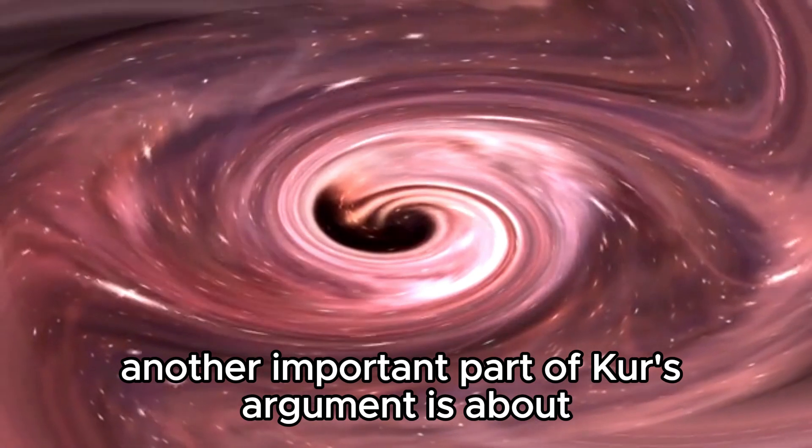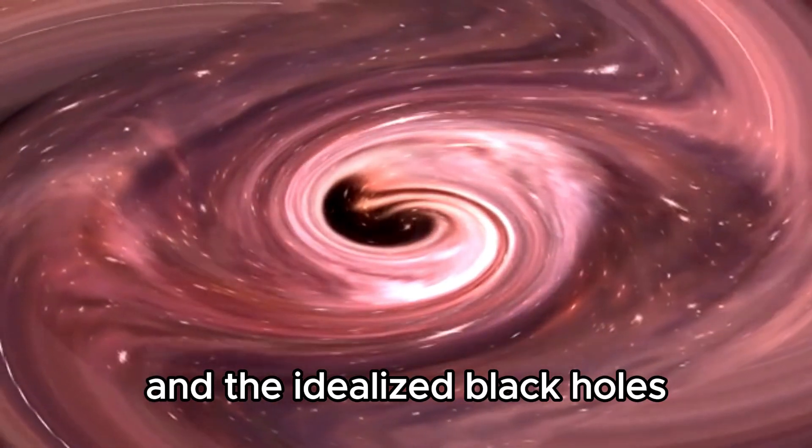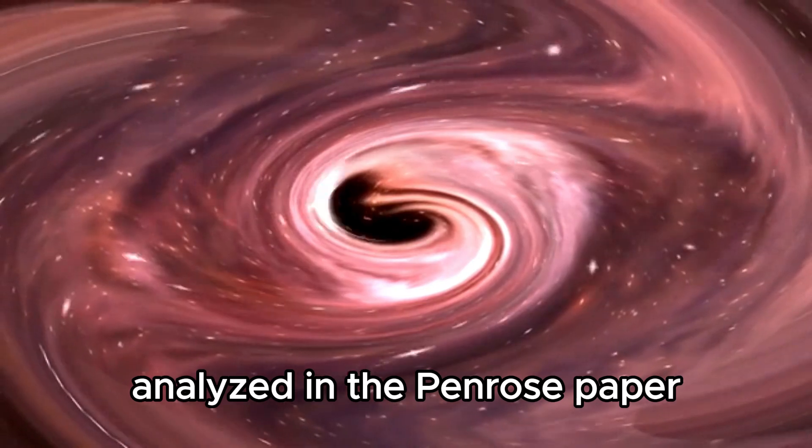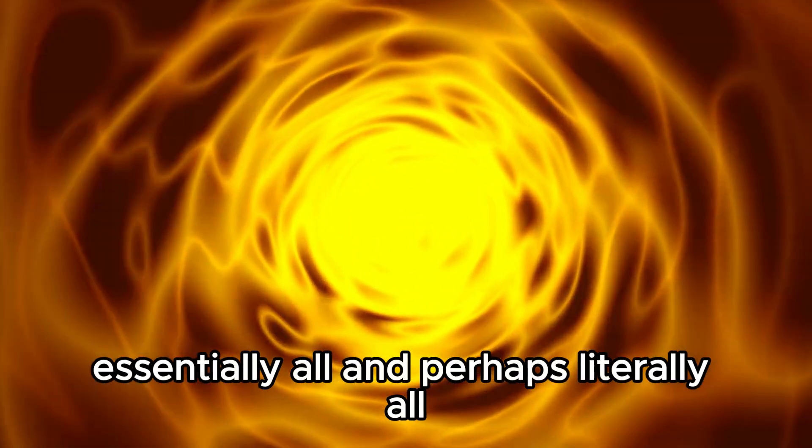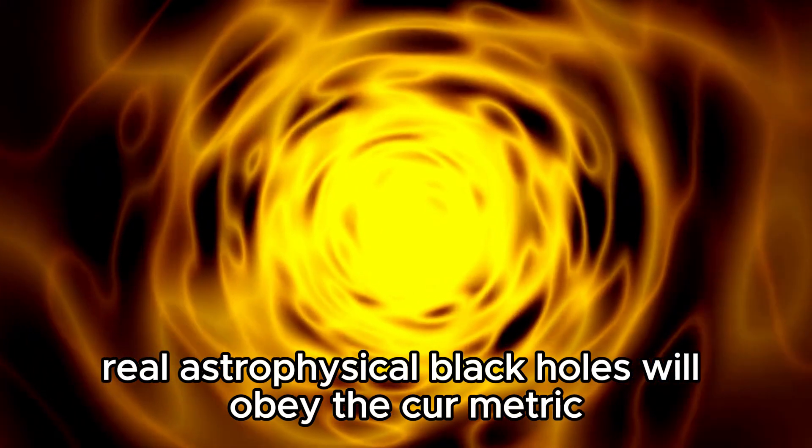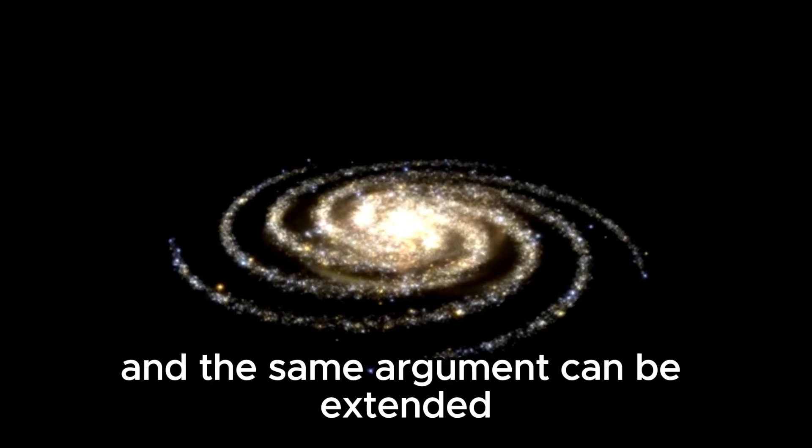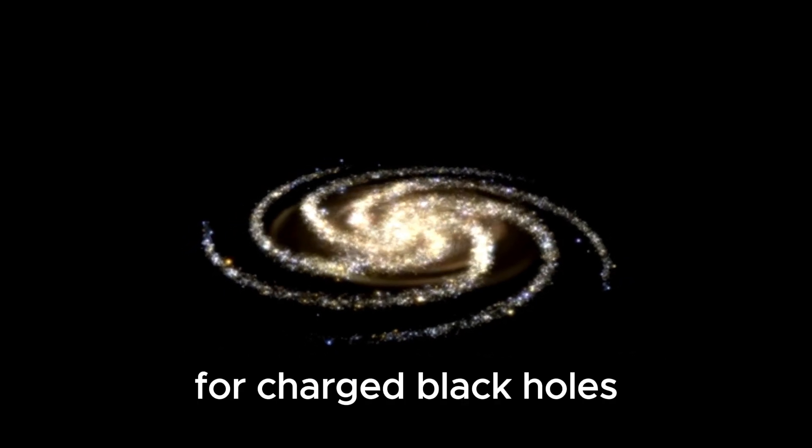Another important part of Kerr's argument is about the difference between real black holes and the idealized black holes analyzed in the Penrose paper. Essentially all, and perhaps literally all, real black holes must have some rotation. Real astrophysical black holes will obey the Kerr metric, not the Schwarzschild, and the same argument can be extended for charged black holes.